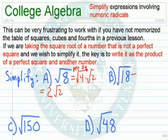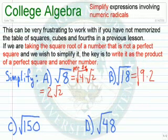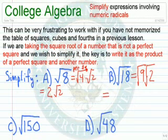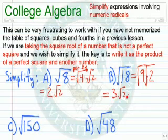The square root of 18. The square root of 18 is not a perfect square. Can we write it as a perfect square times something? Notice 9 times 2. So we write this as the square root of 9 times the square root of 2. What is the square root of 9? 3. The square root of 2 we can't simplify. So our answer is 3 times the square root of 2.